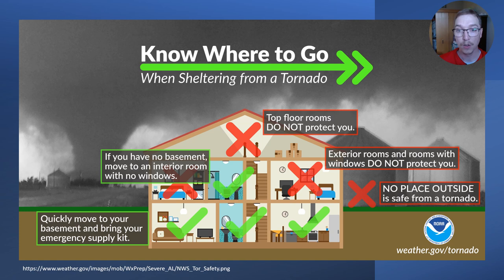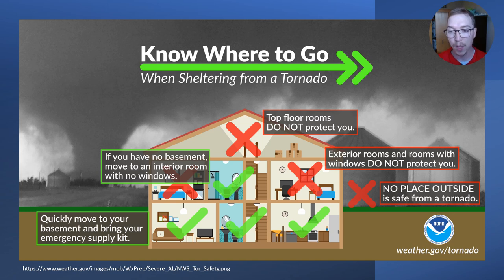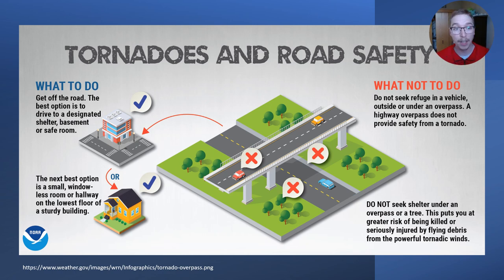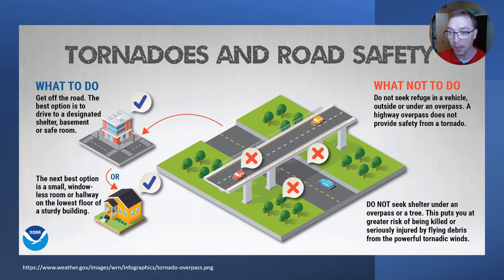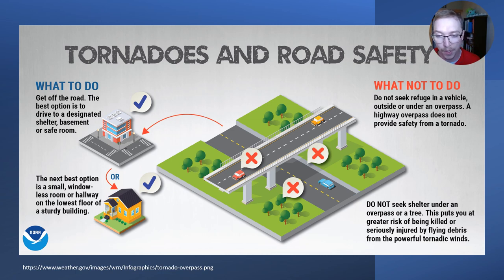If you're at home, don't go to the top floors. If you have no basement, move to an interior room with no windows. Quickly move to your basement if you have one and bring an emergency supply kit. Exterior rooms and rooms with windows do not protect you, and no place outside is safe. If you're on the road, get off the road and get to a designated shelter, basement, or safe room. The next best option is a small windowless room or hallway on the lowest floor of a sturdy building. Don't seek refuge under a highway overpass — that is a common myth and puts you at greater risk from flying debris.